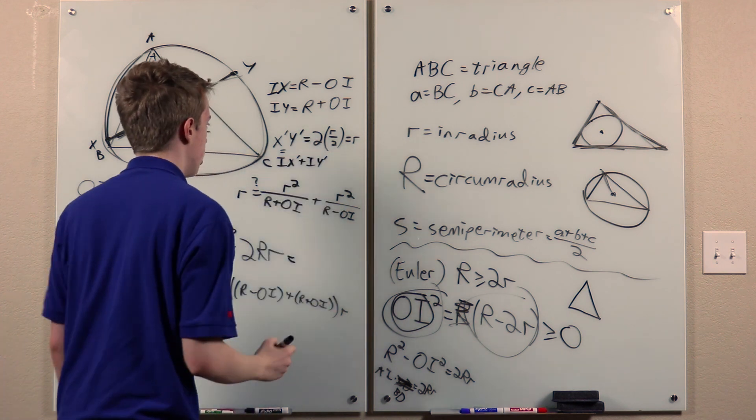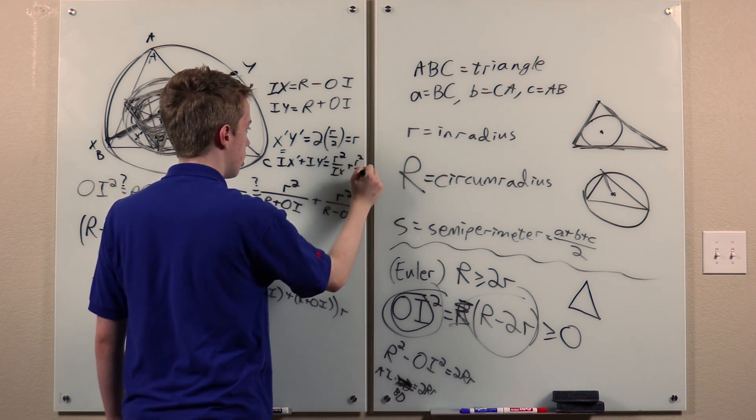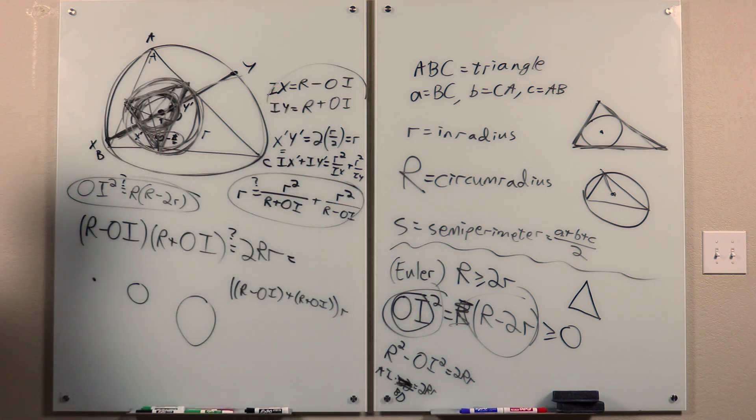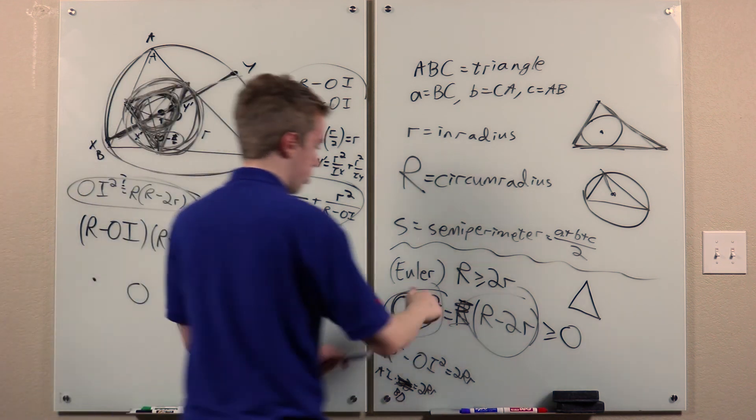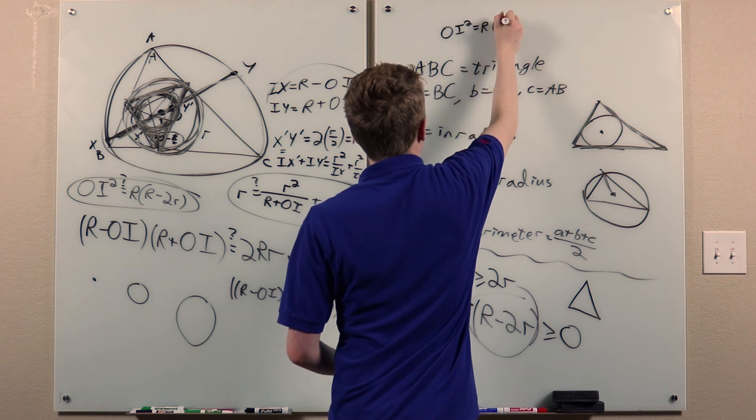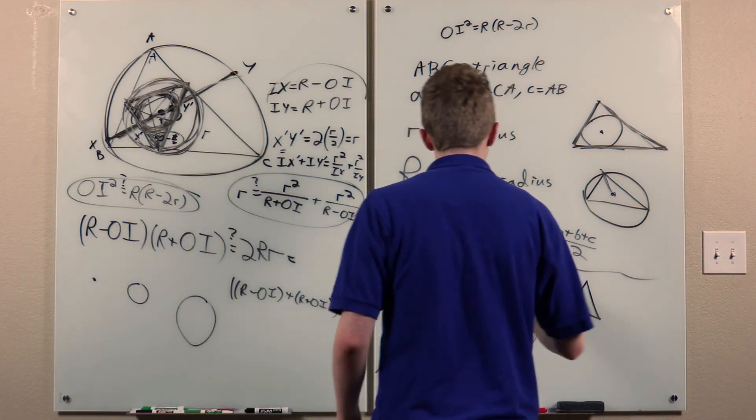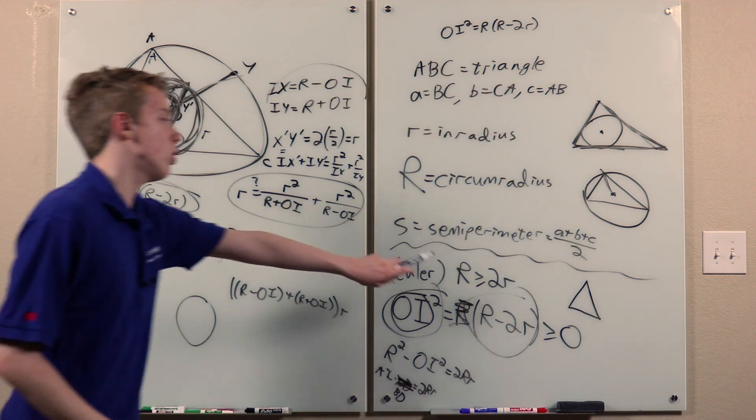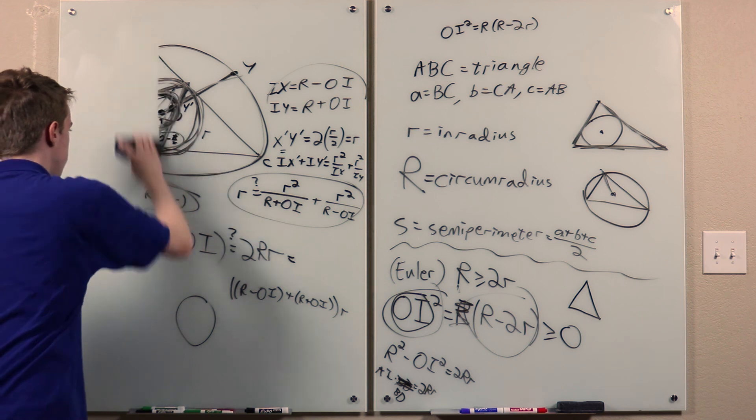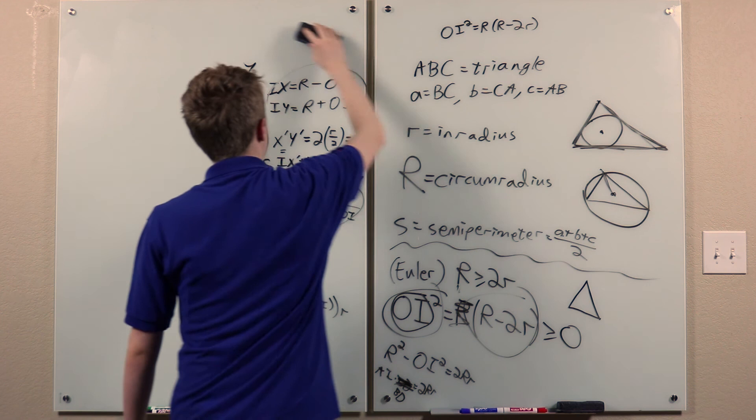So we can write this as this, which is exactly this. And we, from these, we get exactly what we wanted. We get this is true. And so we get this. So that proves this famous inequality of Euler. And actually, this may be known as Euler's own.